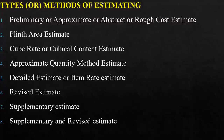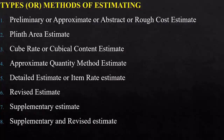The eighth type is the supplementary and revised estimate — a combination of both the revised estimate and the supplementary estimate. This is used when a work is partially abandoned or stopped and the estimated cost of the remaining work is less than 95% of the original work. In simple terms, if a work is abandoned or stopped at the earliest stages — when less than 5% or 10% of the work has been completed and the major part is yet to be done — you go for a supplementary and revised estimate.